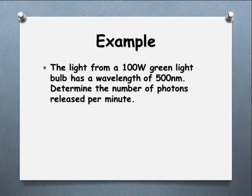Let's have a look at an example. The light from a 100 watt green light bulb has a wavelength of 500 nanometers. Nano is 10 to the negative 9. Determine the number of photons released in a minute.